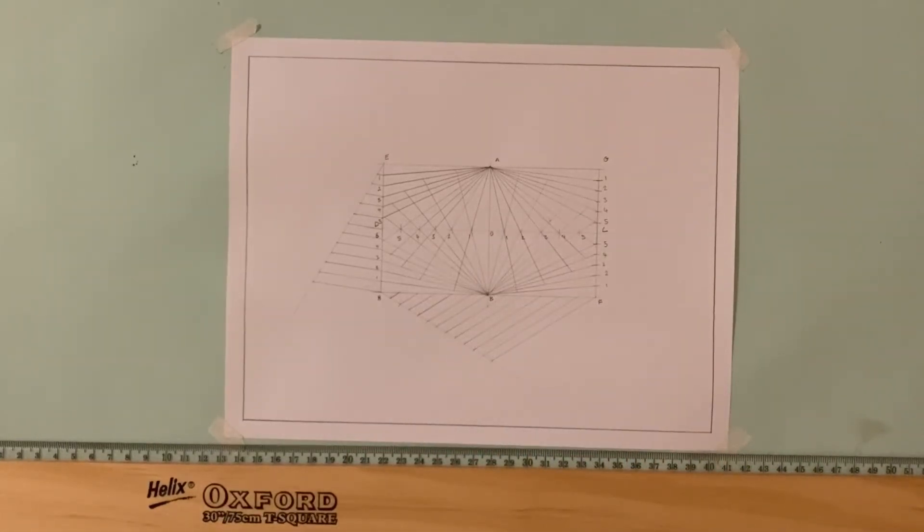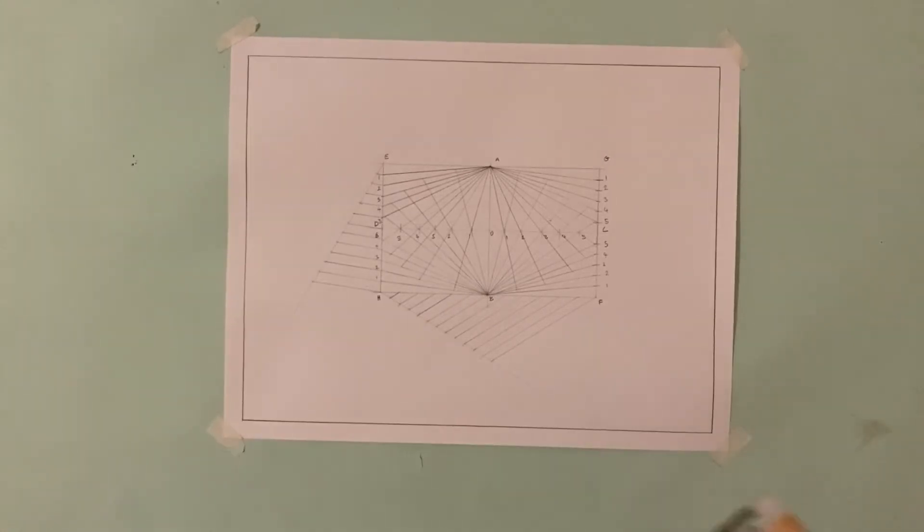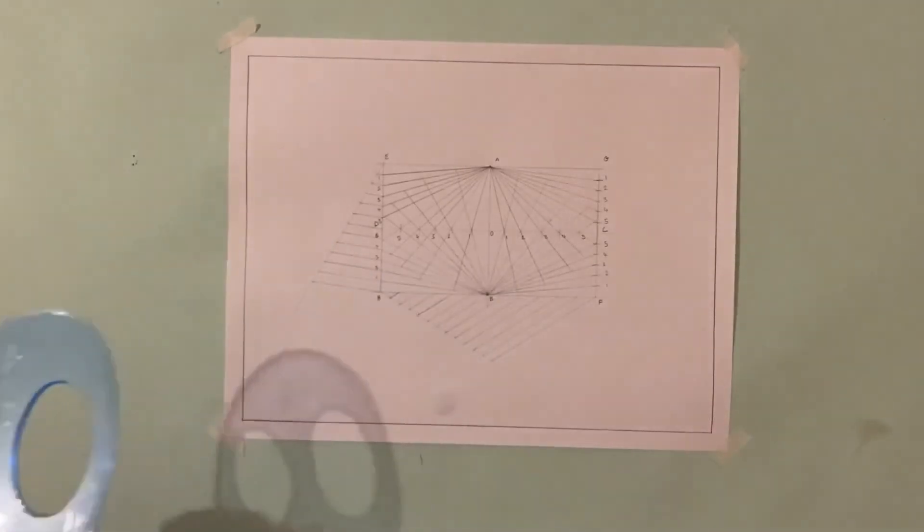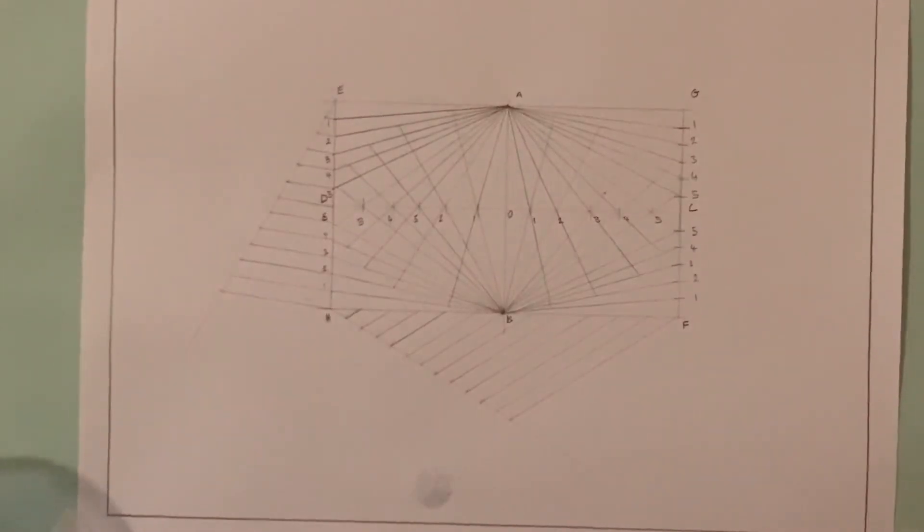Next, what we're going to do is mark out those points using a French curve. If you don't have a French curve, you can also do this freehand, but it is better to have a French curve in doing this. So I'm going to go ahead now and join all my points using my French curve.